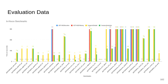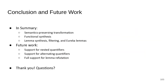S means satisfiable and U means unknown. ADT-IND is substantially faster than VAMPIRE, but it's not as complete.